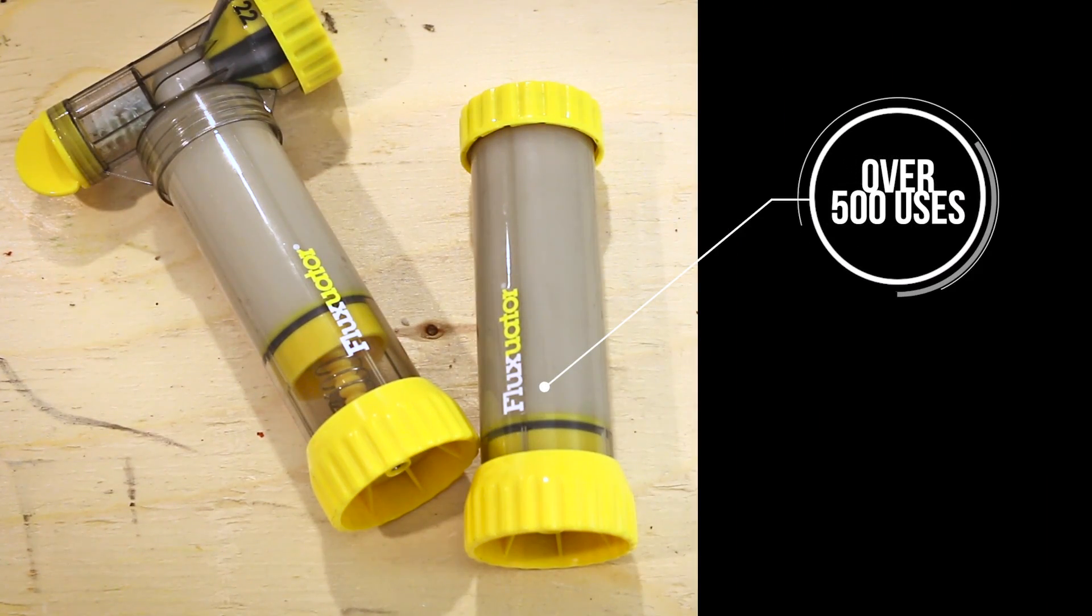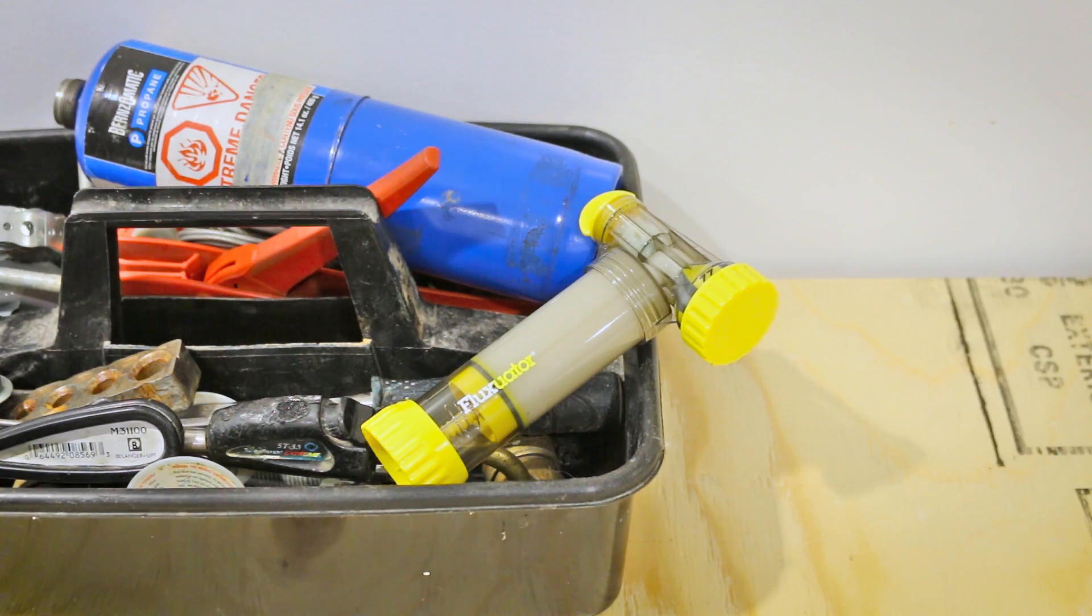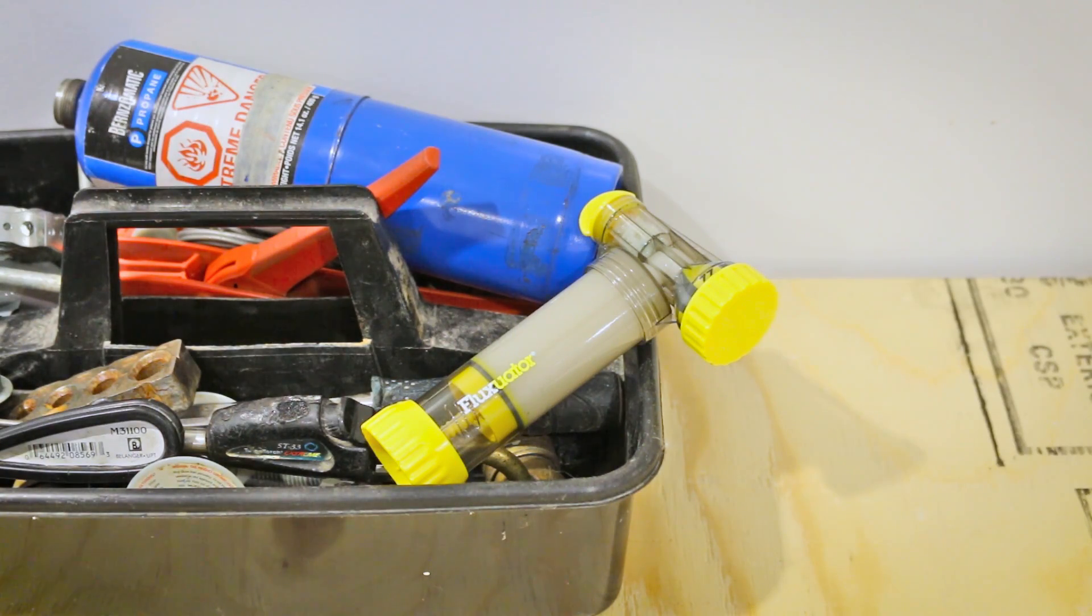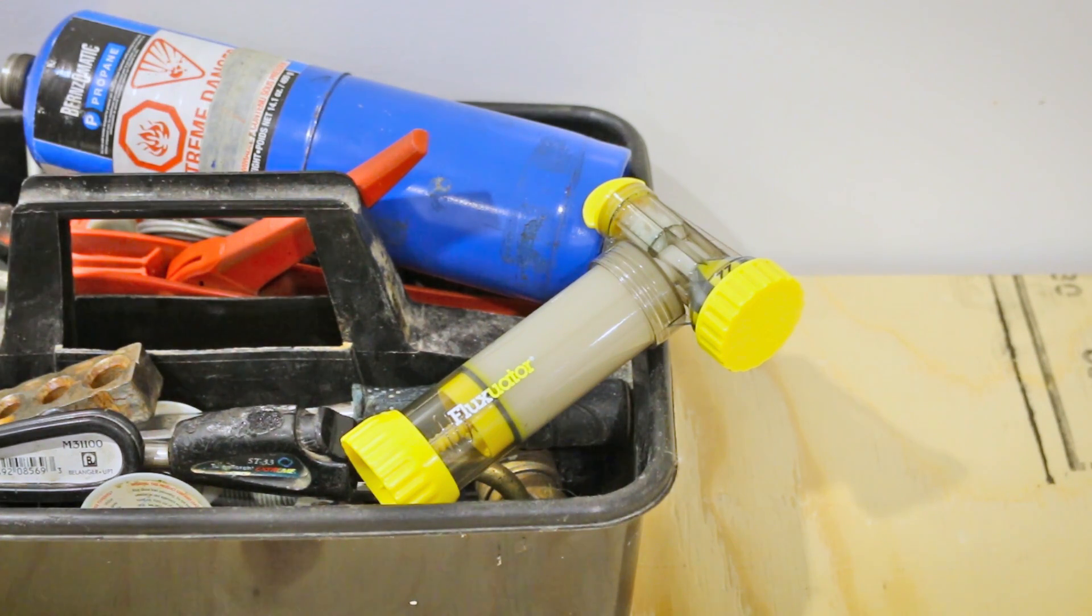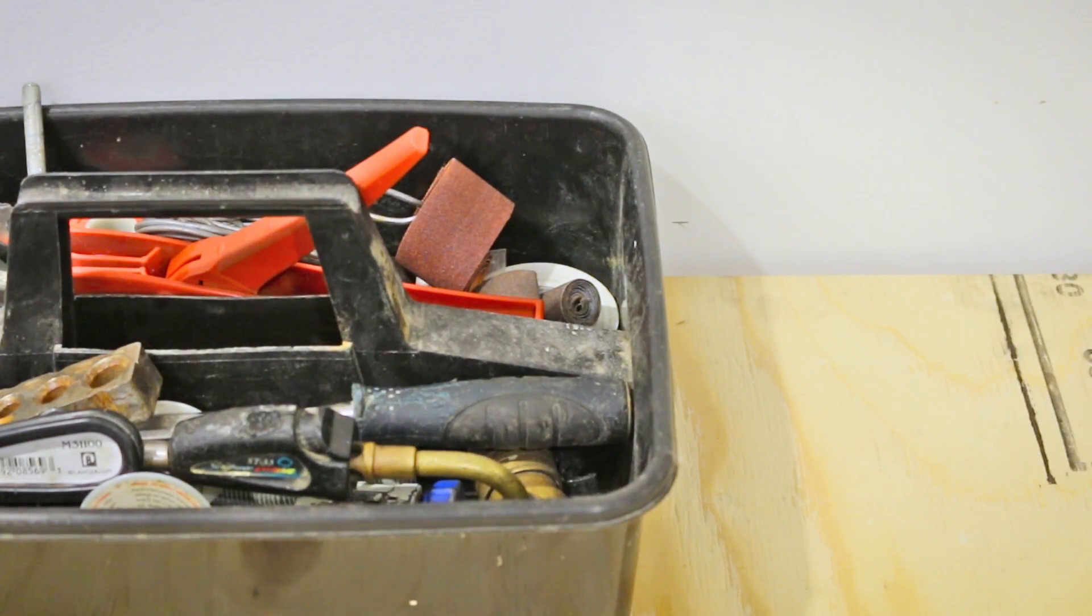Each refill has approximately 500 uses which is great when doing big jobs. Another positive aspect of the Fluctuator is the fact that you'll always have flux with you in your toolbox. On bigger job sites such as high-rise buildings, other workers may be using all the available flux, leaving you empty-handed and slowing down your productivity.